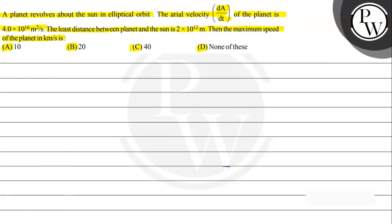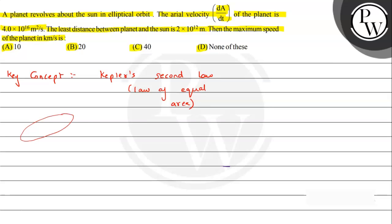To understand this question we need to understand the key concept of Kepler's second law. Kepler's second law is also known as the law of equal areas. So let's summarize it. Let's suppose we have a sun located at one of the foci of the ellipse.